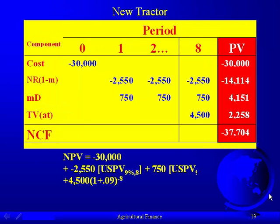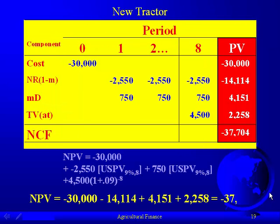To calculate the net present value, we can see that the $30,000 is already in present terms. We find the present value of the after-tax net returns by recognizing that it's a uniform annuity, so we multiply it by the USPV factor at 9% for eight years. The $750 tax savings from depreciation is also a uniform annuity, so we multiply it by the same USPV factor.